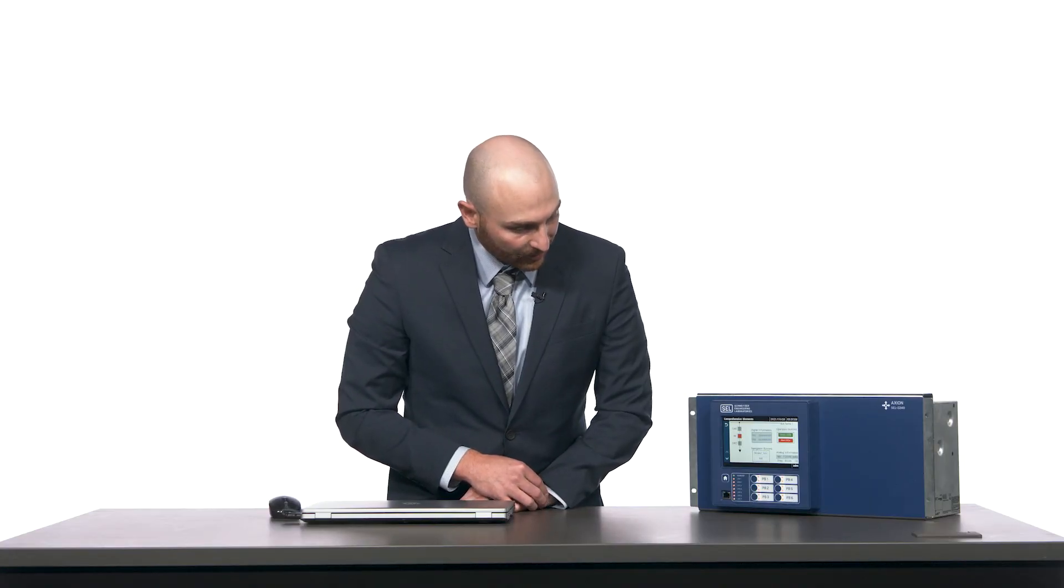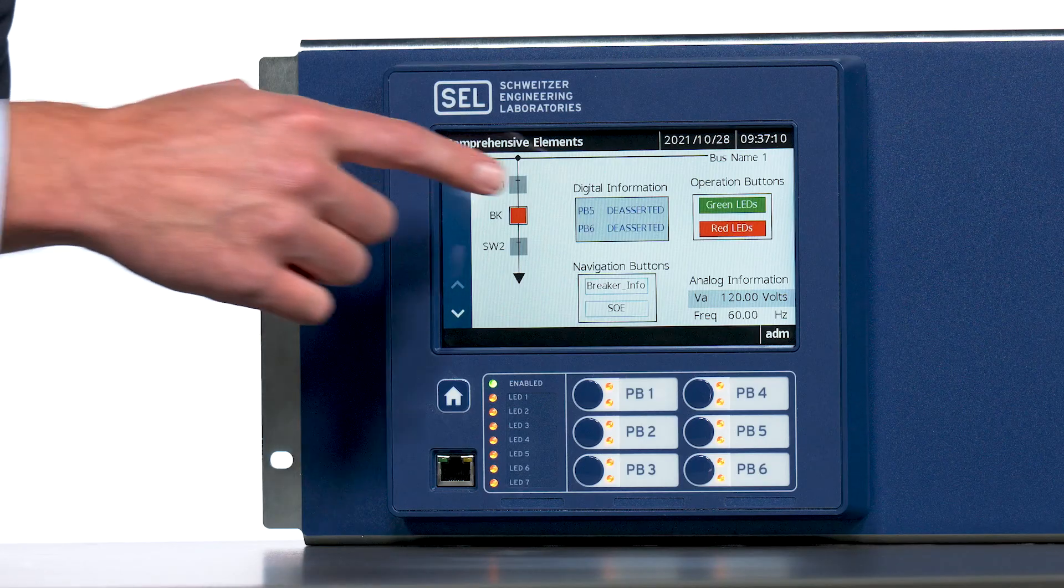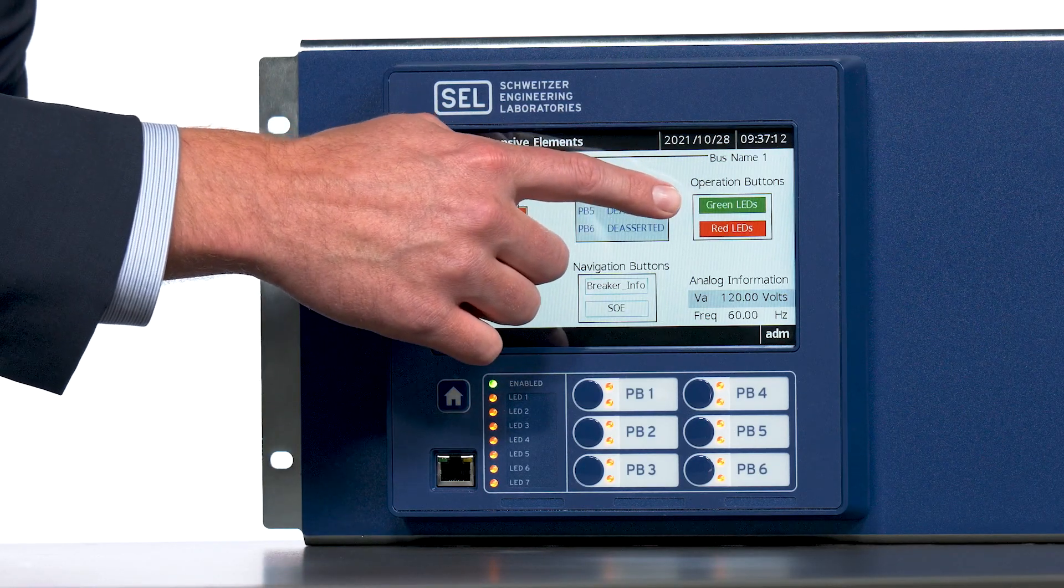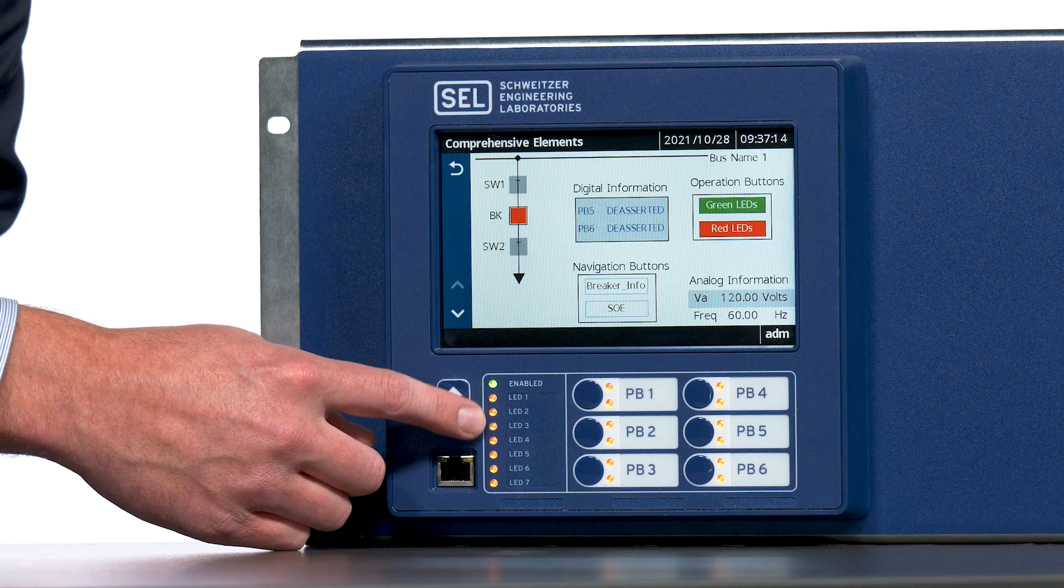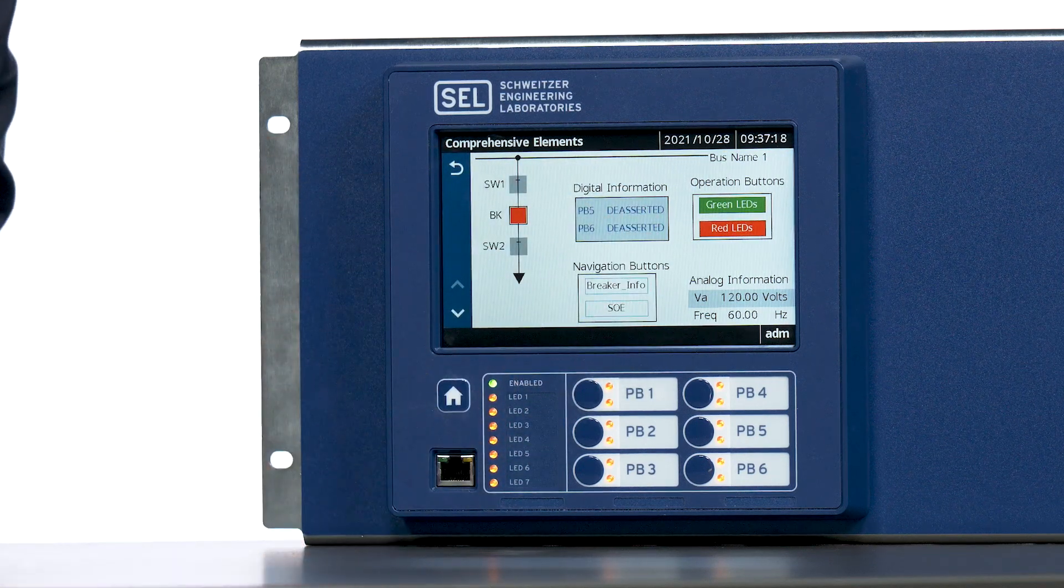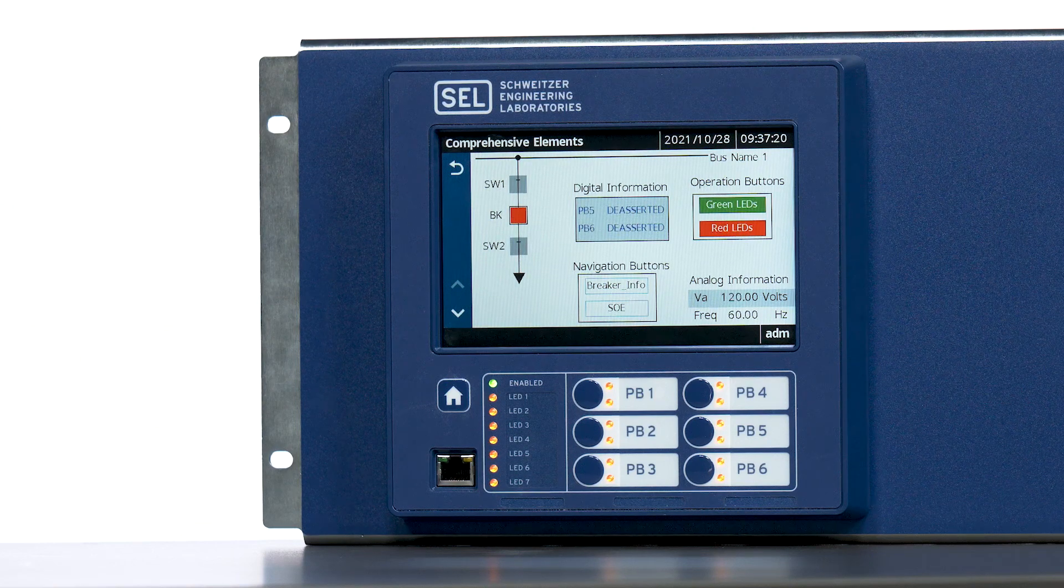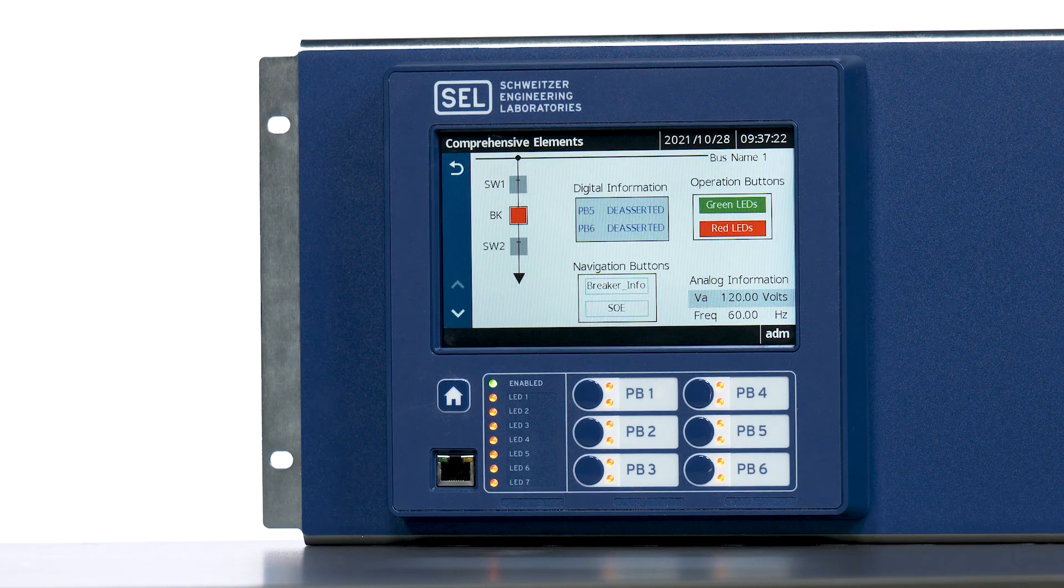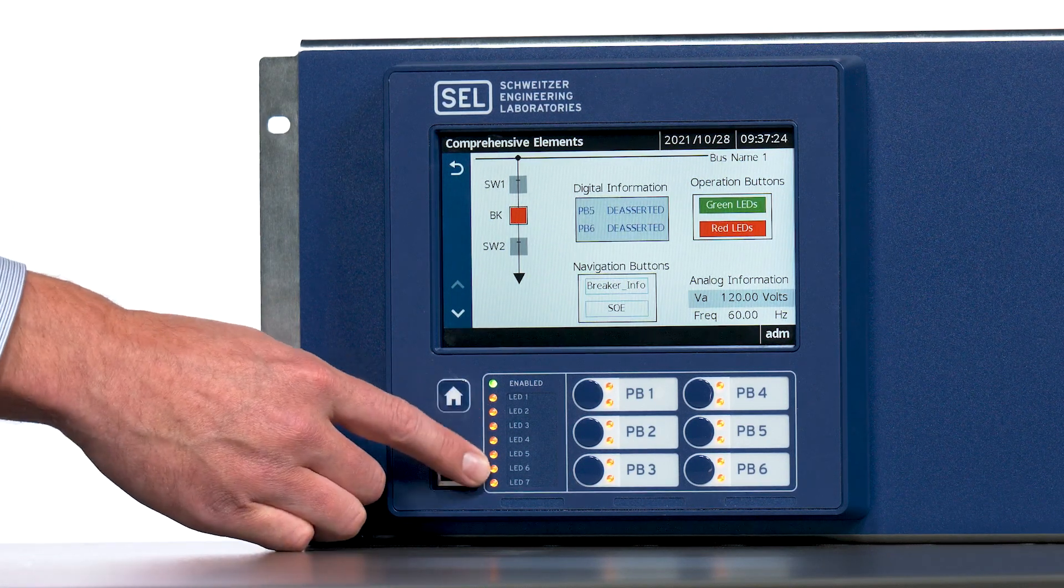Next, I want to show our operation buttons. We have two operation buttons, one for asserting all the green LEDs and the other for asserting the red LEDs. The Axion Bay controller has tri-colored LEDs, which support red, green, and amber. They are currently in the amber state.